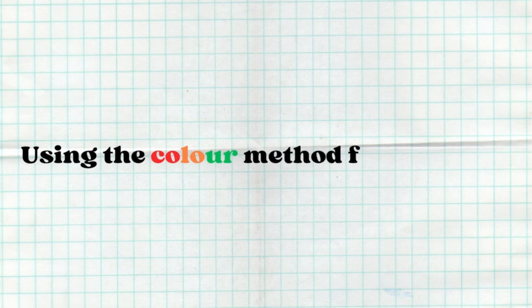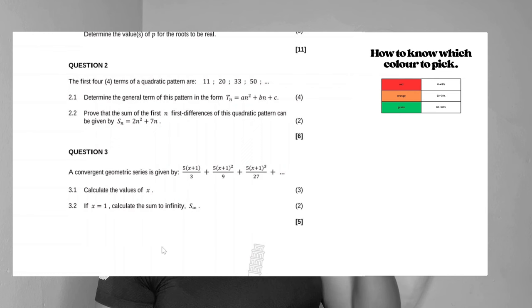Now I'm going to pull up a past paper — this is a term one paper — and show you in action how to use the Red, Orange, and Green method. We're going to focus on one topic. I'll use number patterns. You can see we're looking at question two, which is a quadratic number pattern. To test whether you're red, orange, or green, I'd advise you to do the question and mark yourself.